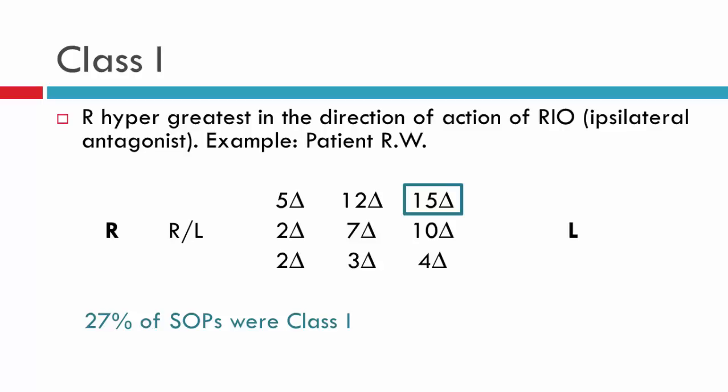Knapp's classification includes seven classes and we'll go through each of these individually. The examples in this video are all related to a right superior oblique palsy unless otherwise stated, so what you'll see can be translated directly to a left superior oblique palsy even though our discussion will focus around right superior oblique palsy.